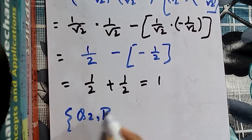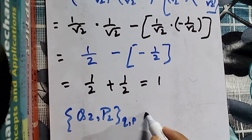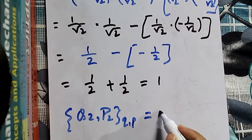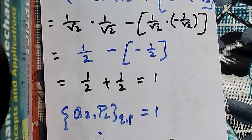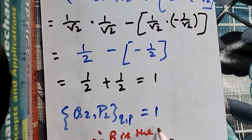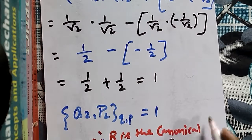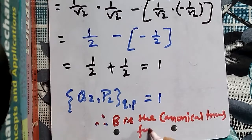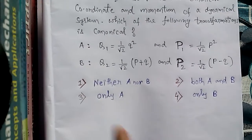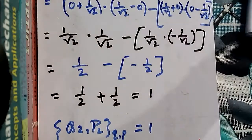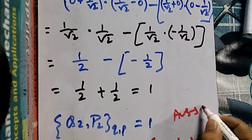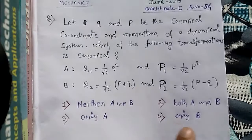The Poisson bracket of Q2, P2 with respect to the old coordinates small q, small p equals 1. This satisfies the condition for a canonical transformation. Therefore, B is the canonical transformation. The answer choices are: neither A nor B, both A and B, only A, or only B. Since only B satisfies the condition, the answer is option 4 — only B is the canonical transformation.